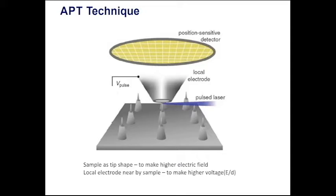A typical APT setup consists of three parts: sample, electrode, and detector.